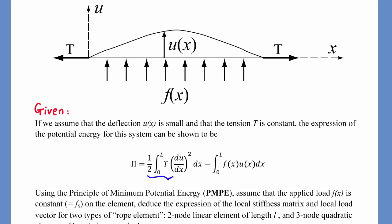Total potential energy pi is equal to strain energy U minus potential energy of external force V. Here, the tension T is a constant.